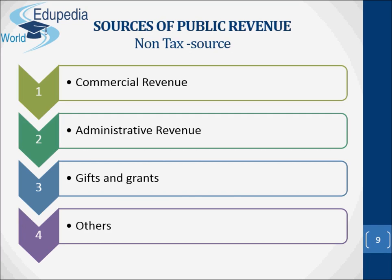Regarding the issuing of currency: the printing of paper money yields income to the government. It is used to create extra resources, but is normally avoided because once this method of financing is started, it becomes difficult to stop and further leads to inflation. Concerning borrowings, this is another source of public revenue — through borrowings from the public in the shape of deposits, bonds, etc. It also includes external borrowings.